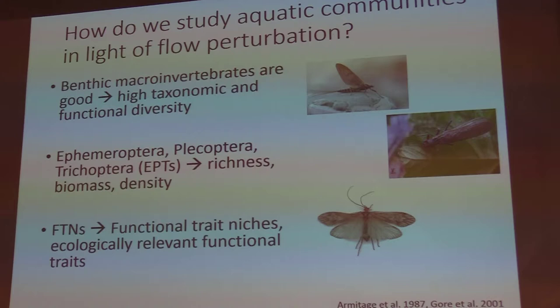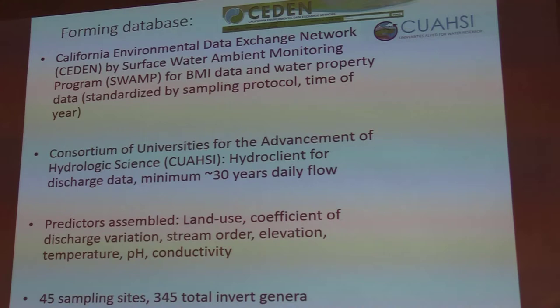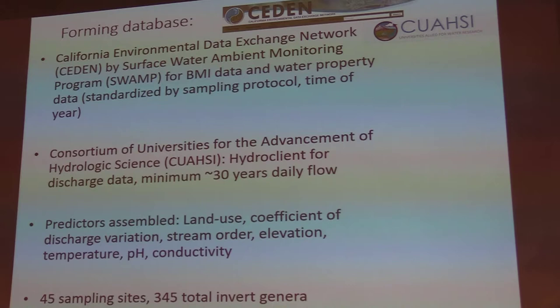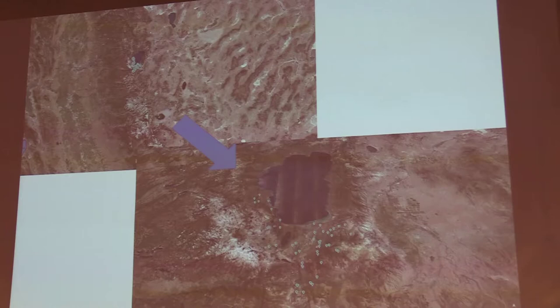The methods used in this project: we formed a database, did some ordinations, and employed variation partitioning techniques to link environmental and spatial variables at larger scales. I utilized the CETA network and SWAMP data, along with gauge data for flow variables, and assembled predictors from various databases. For this study, I focused on the Lower Lake Tahoe catchment, with the idea of scaling up to other catchments once we nail down a protocol.